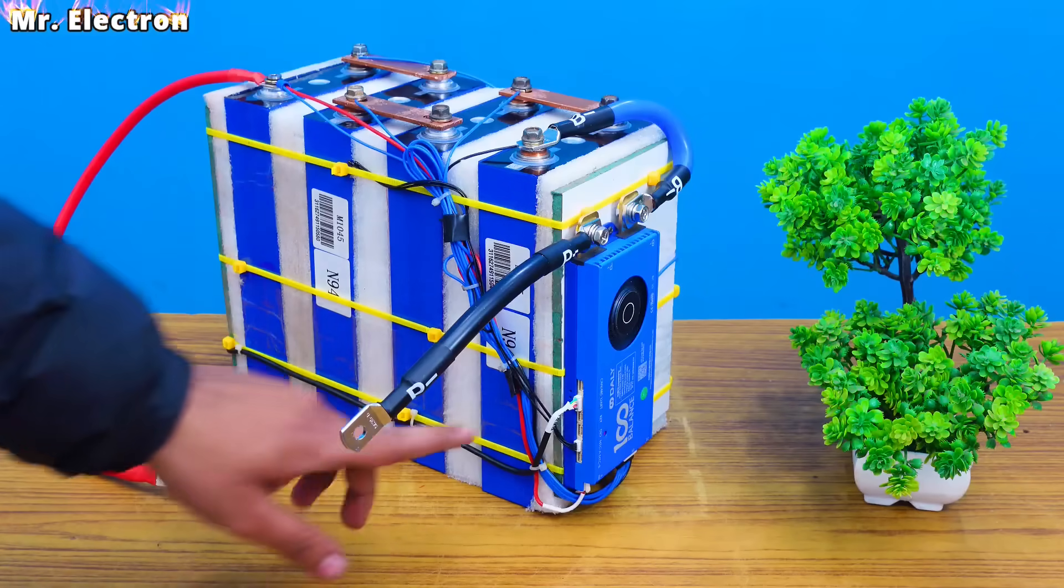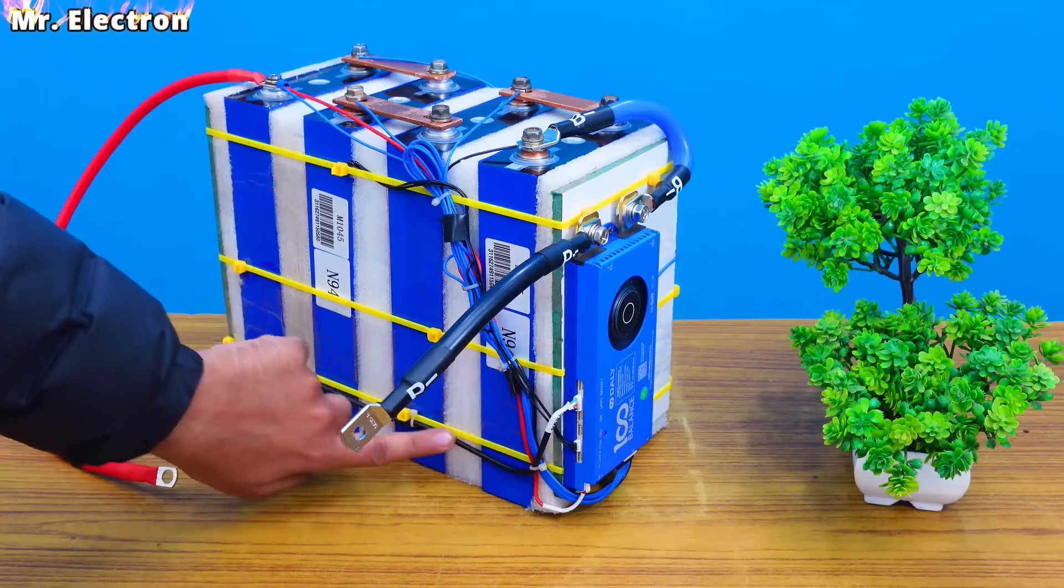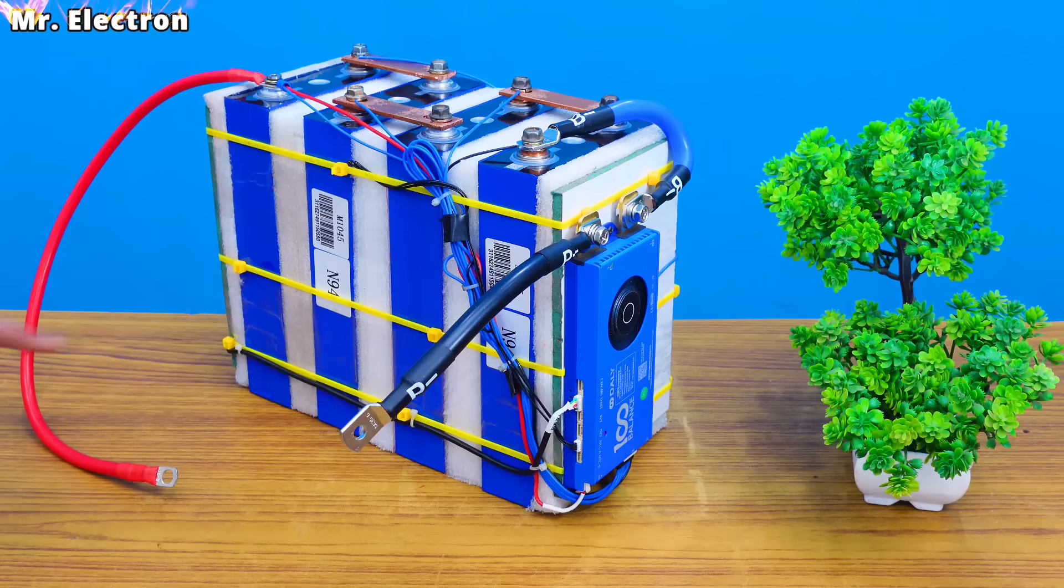So here I finally placed the Wi-Fi module. The wire goes like this parallel to the zip tie. The last one. And here we have it at the back.